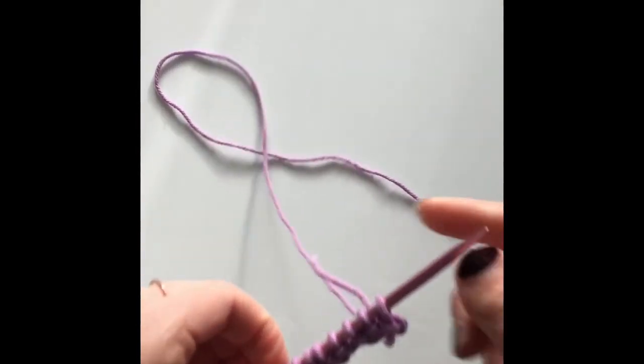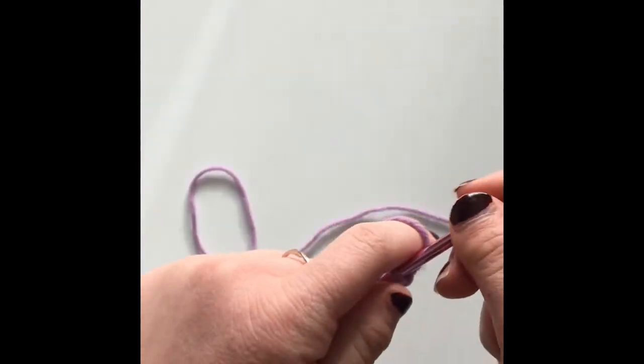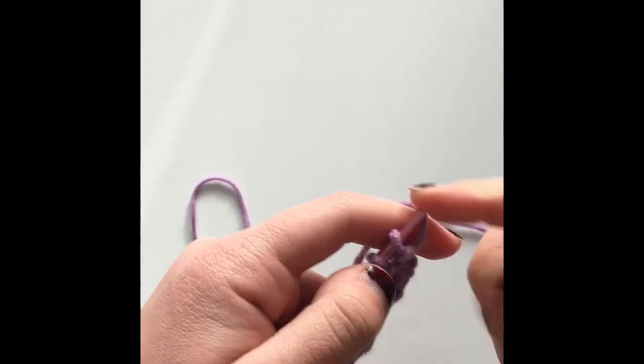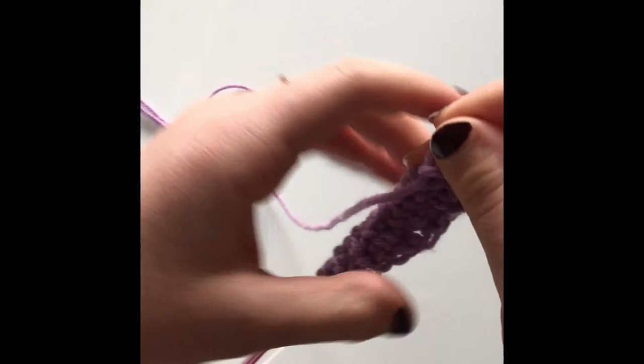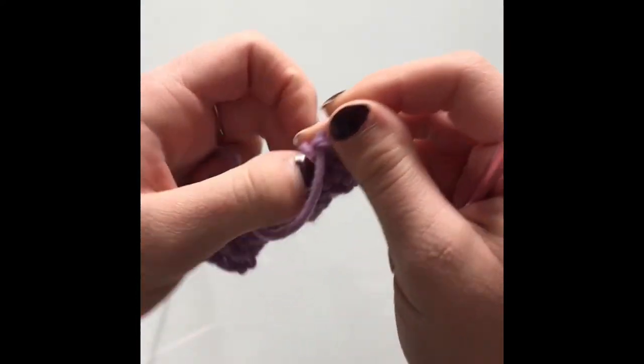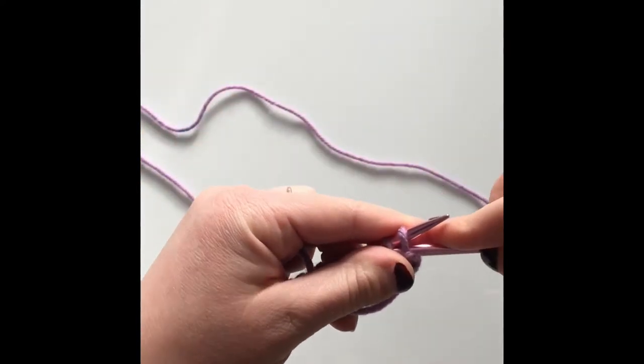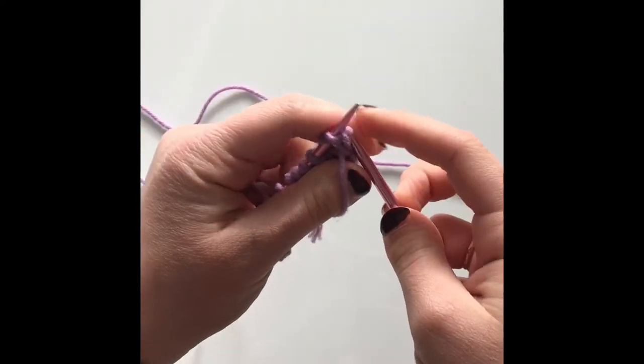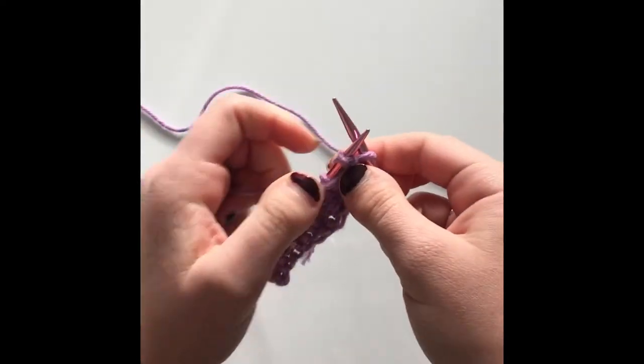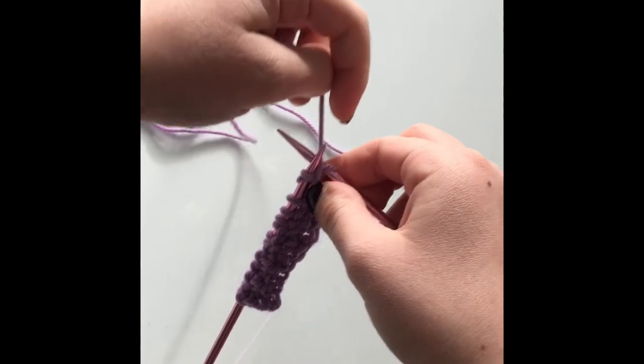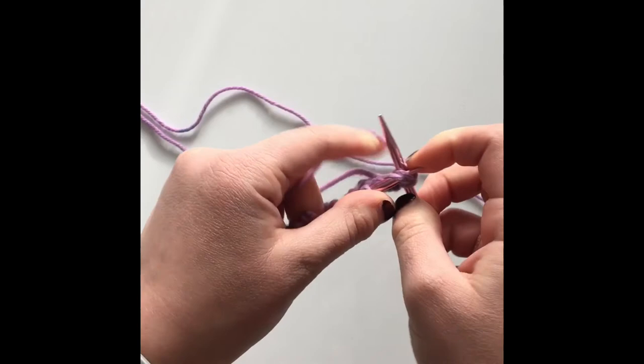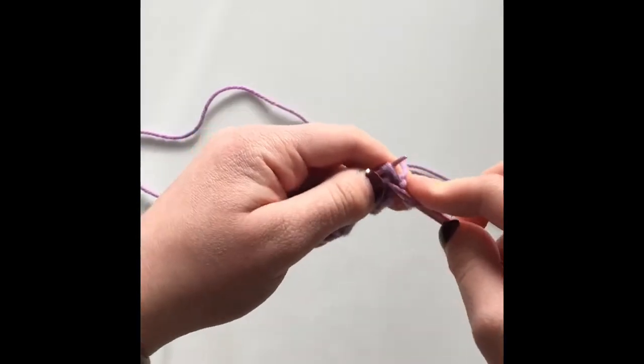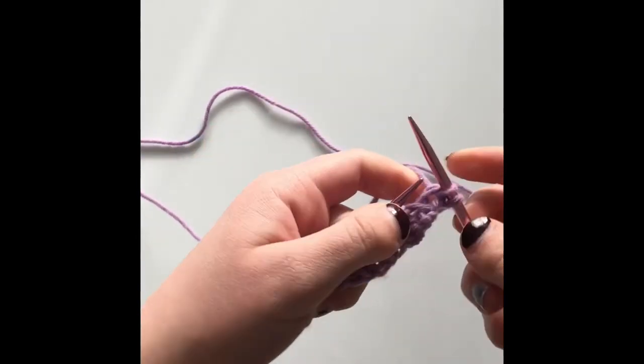Okay, for the very last row, row four, this is very similar to row two. Except instead of starting by knitting the first stitch, we are going to end by knitting the last stitch. So yarn in front here, we are going to purl these two stitches together, and then knit these two stitches together. And now you can take them off the needle.